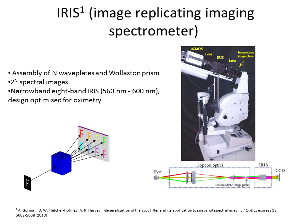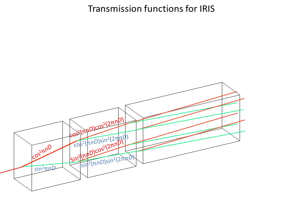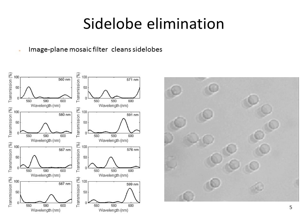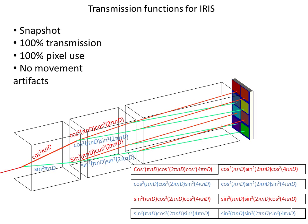The advantage of IRIS over other spectral devices is that it's a snapshot device, which doesn't produce movement artifacts, and which has 100% transmission, which is quite good to produce images with good SNR.